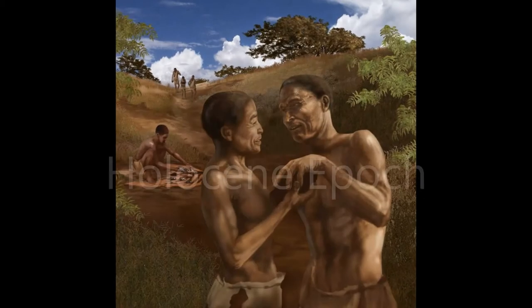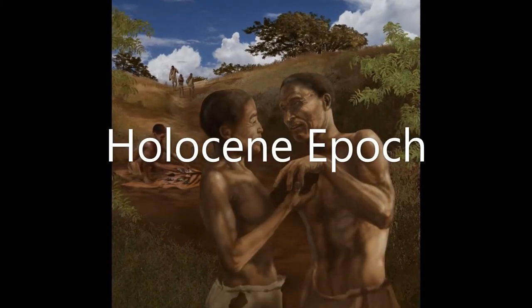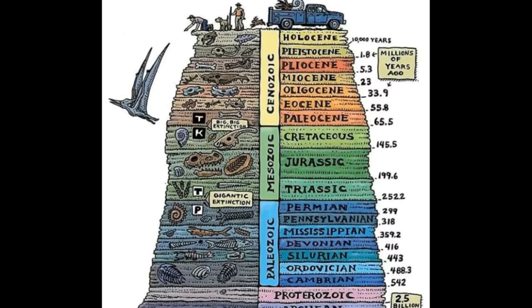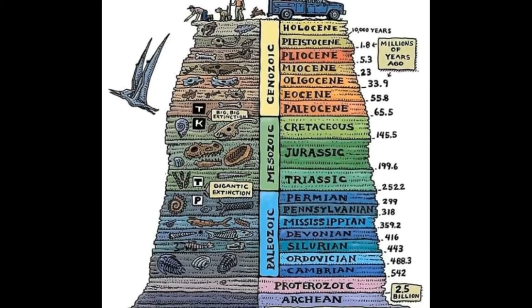These are Eons, Eras, Periods, Epochs, and Ages. We are currently in the Holocene Epoch, which started 11,700 years ago.